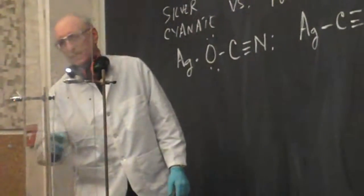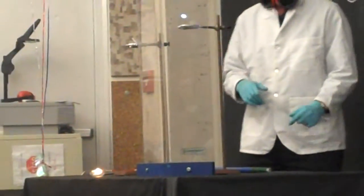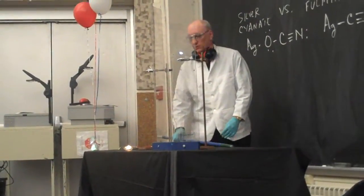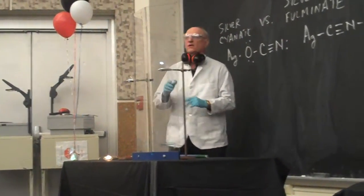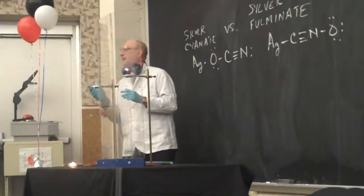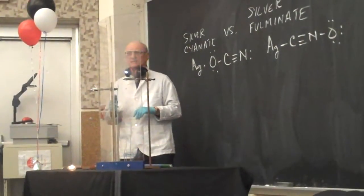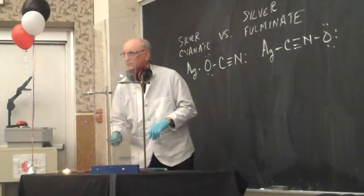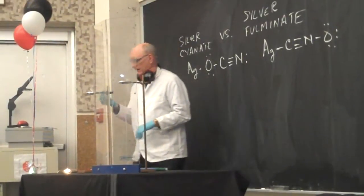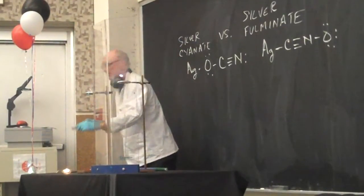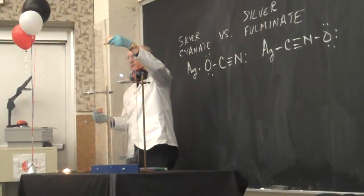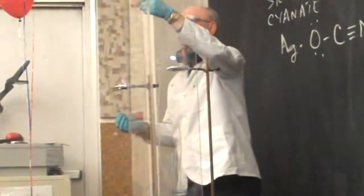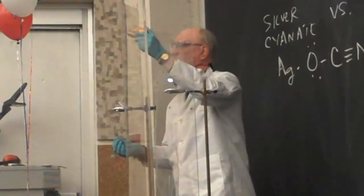So what I have over here is two setups — one has silver cyanate and one has silver fulminate. The other thing I wanted to illustrate was the fact that silver fulminate has a very, very limited amount of usefulness. The main usefulness these days is for these things, which are probably illegal in the state of New Jersey, but you can sell them. These are small fireworks.